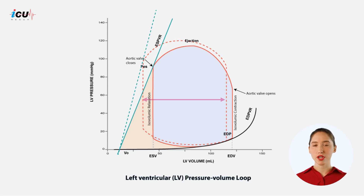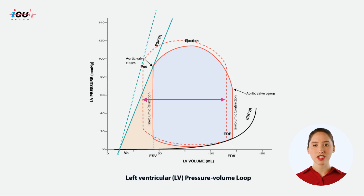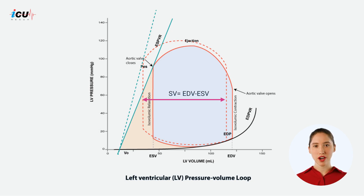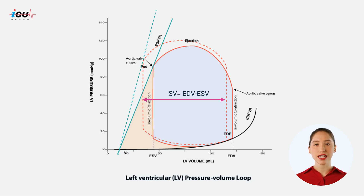Finally, the stroke volume (SV) is the amount of blood ejected by the left ventricle during each contraction, calculated as the difference between end diastolic volume and end systolic volume. Therefore, with increased contractility, because ESV decreases while EDV remains the same or slightly decreases, stroke volume increases.